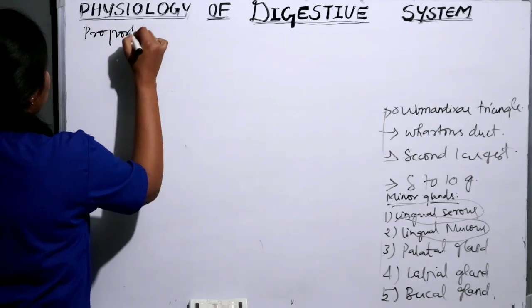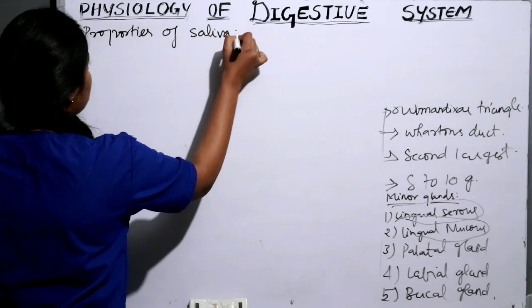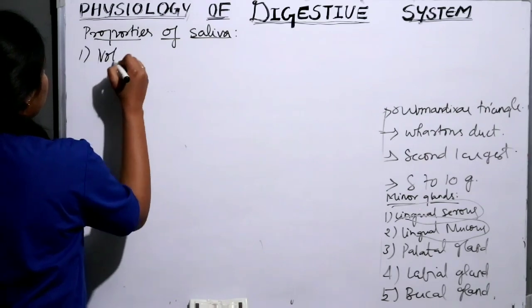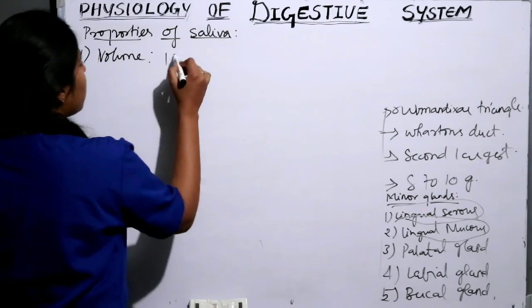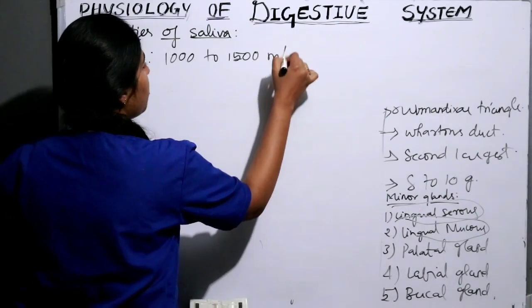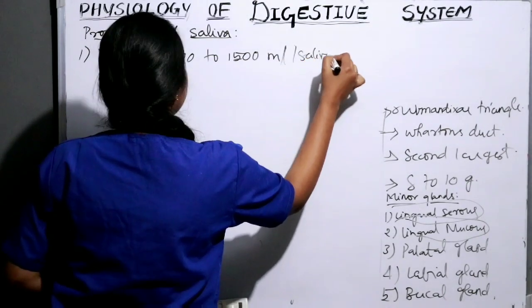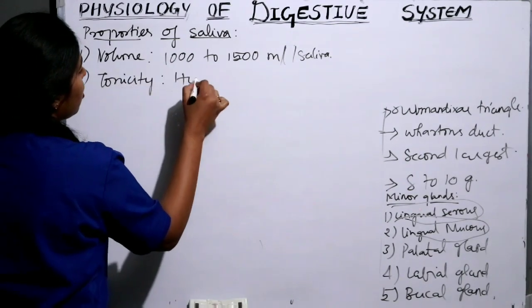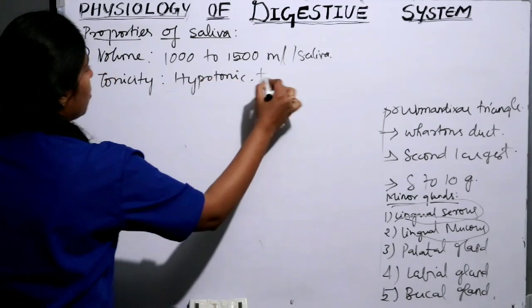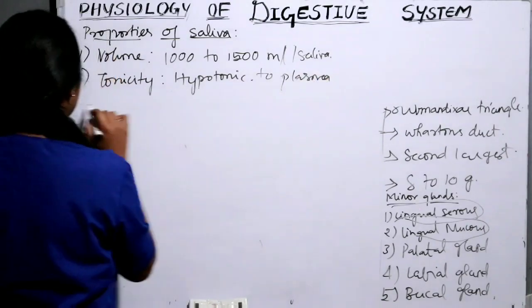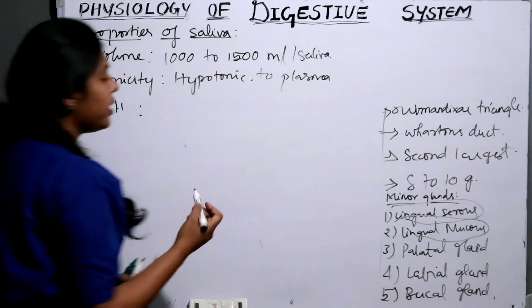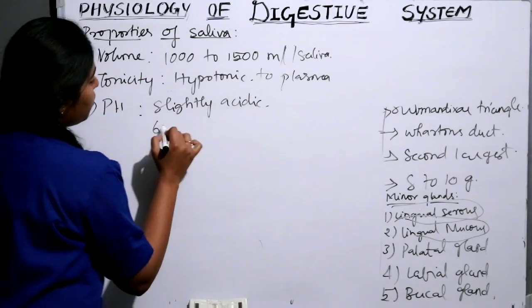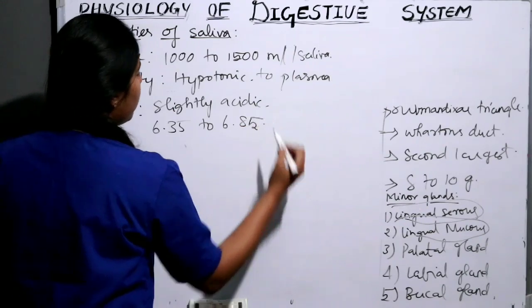Now we will discuss the properties of saliva. Volume per day: 1000 to 1500 ml of saliva is secreted per day. Tonicity: it is hypotonic to plasma. pH: it is slightly acidic, ranging from 6.35 to 6.85.